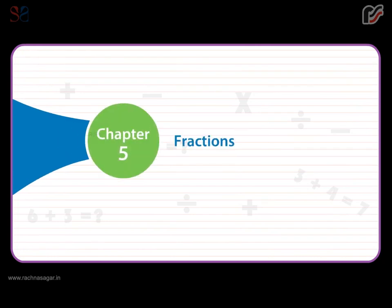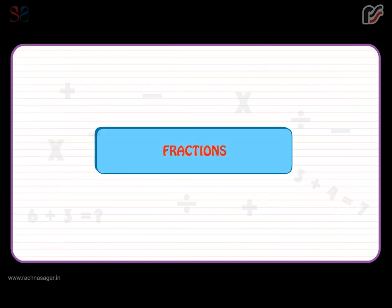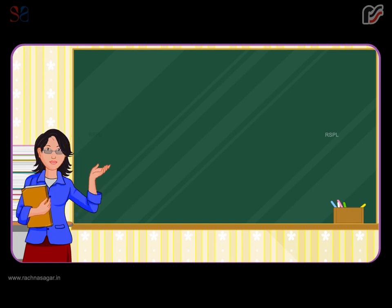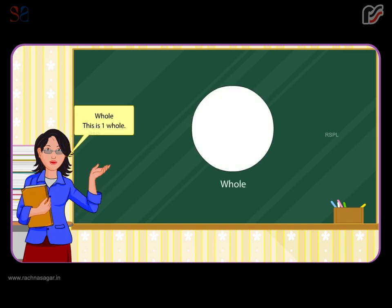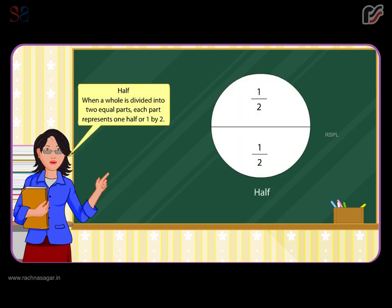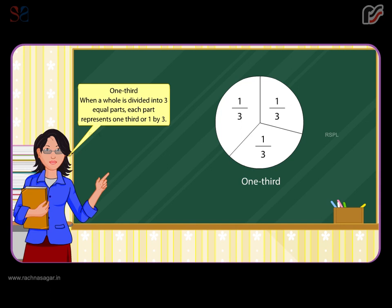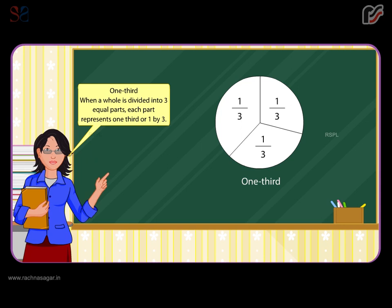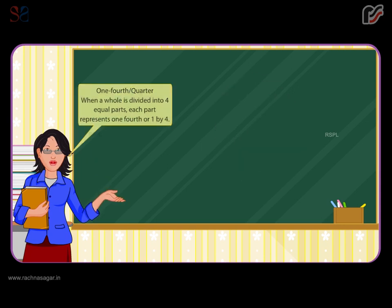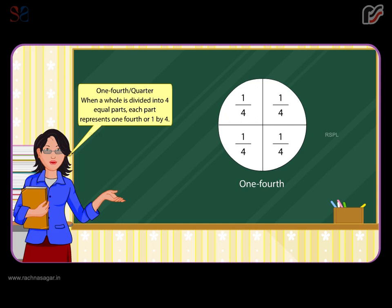Chapter 5: Fractions. A fraction is a part of a whole. This is one whole. When a whole is divided into two equal parts, each part represents one half or one by two. When a whole is divided into three equal parts, each part represents one third or one by three. When a whole is divided into four equal parts, each part represents one fourth or one by four.